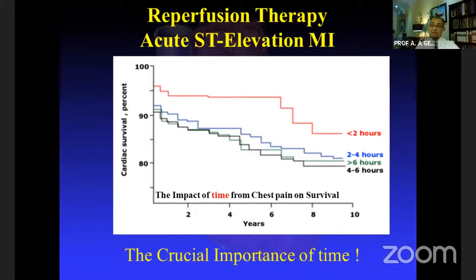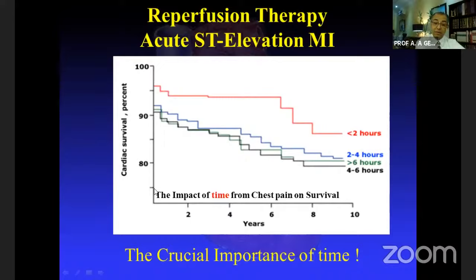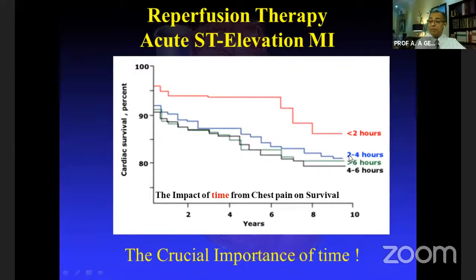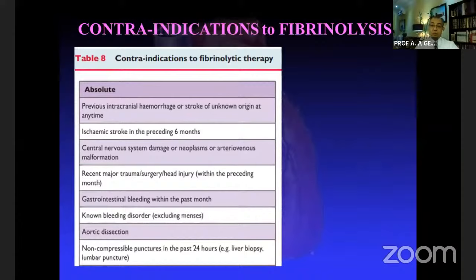Before the patient comes, delay can be due to the patient himself or the ambulance. Once the patient is in our hands, time is our responsibility. Looking at survival after STEMI at two, four, six, and eight years on a Kaplan-Meier curve, patients who received thrombolytic therapy within two hours of chest pain had significantly better survival than those treated at two to four hours or more than six hours. Time is extremely important for both thrombolytic therapy and primary PCI.